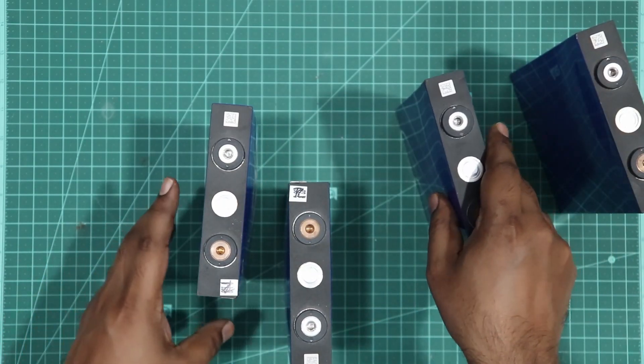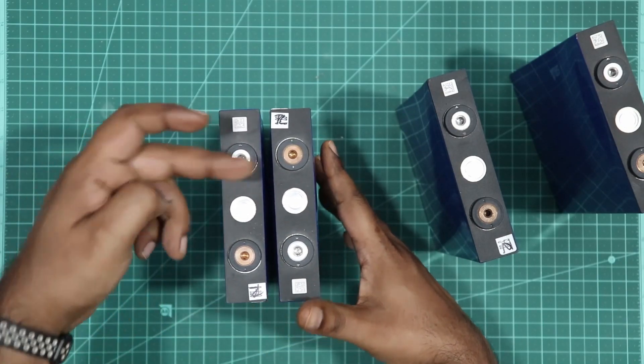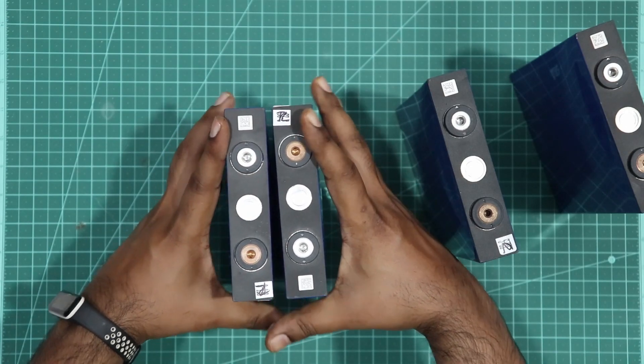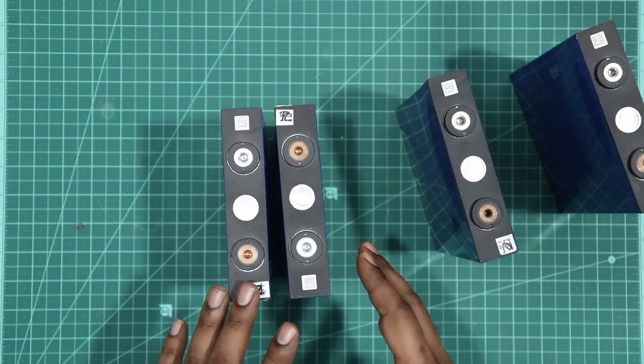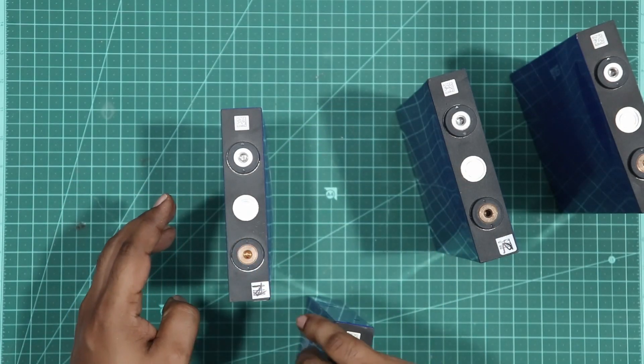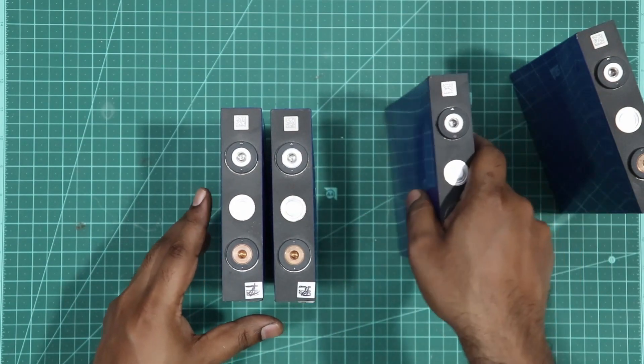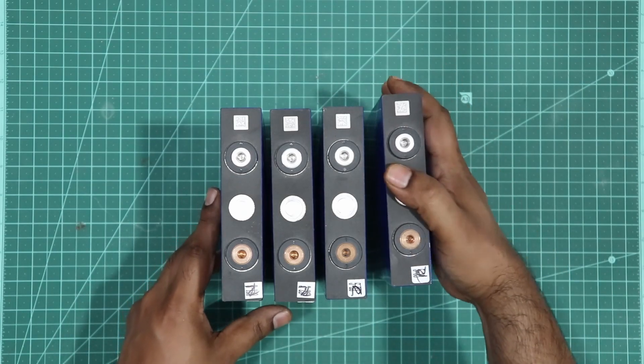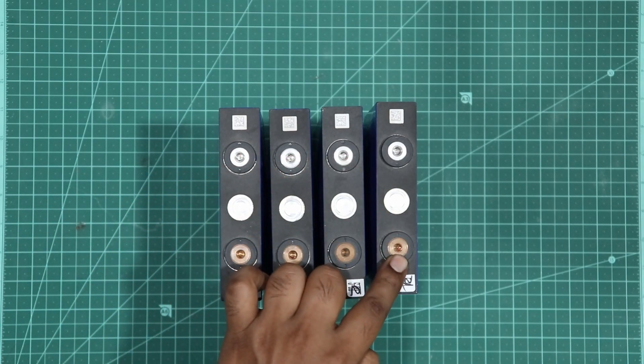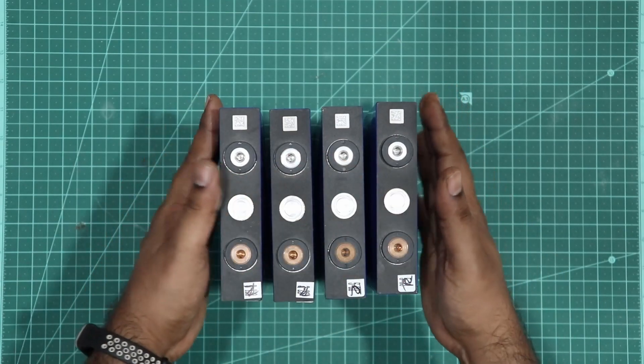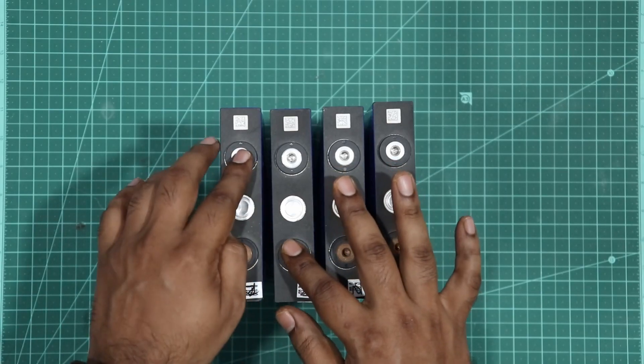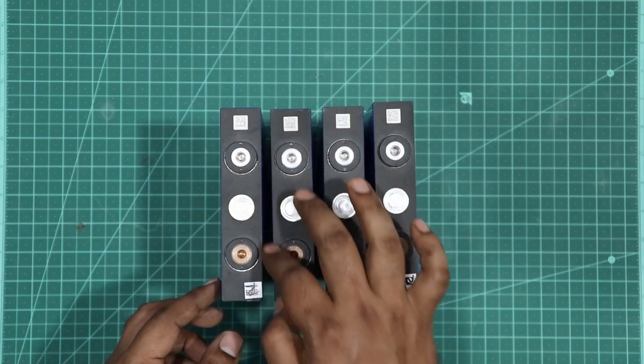Normally when you connect prismatic cells you arrange them where the positive and negative are facing each other and keep a busbar on top. Whenever you use these cells with a busbar, they'll expand and contract, and the rigid busbar will stress out the terminal. Instead, we'll use diagonal connections. We'll arrange all the cells in one direction so all the positives are on one side and all the negatives on the other side, then do diagonal connections from first cell to second, second to third, and third to fourth. When you do diagonal connections using silicon wire, even if they expand, the wire can take out the stress.